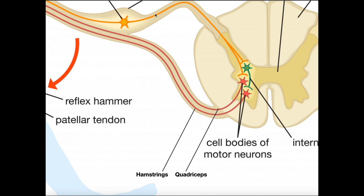Following the proximal axon extension from the dorsal root ganglion of the sensory neuron, it bifurcates into two branches. Both branches are excitatory, meaning they're going to excite or activate the next neuron in the sequence. Looking at the branch going to the quadriceps: here we have a branch of the sensory neuron synapsing directly with the quadriceps motor neuron. So if this sensory neuron excites the motor neuron to the quadriceps, then the quadriceps are going to contract.